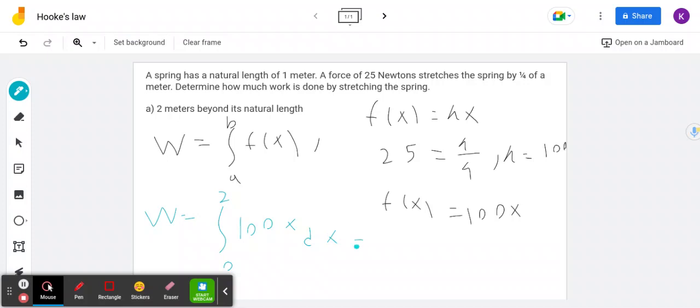Integrating 100x, we get 50x squared, evaluated from 0 to 2. We get 2 to the power of 2 is 4, so we get 200 joules.